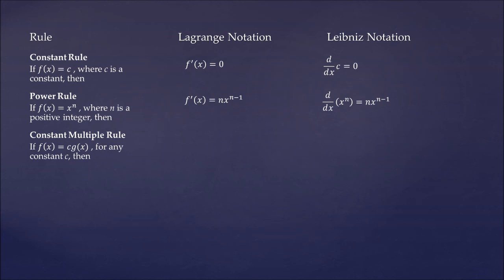Now, a constant multiple rule for a function f of x that's equal to c, a constant times g of x. Well, the derivative for such a function is going to be just keeping the c, the constant, as a factor and derivating the expression g of x using any other rule that apply.